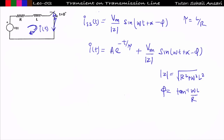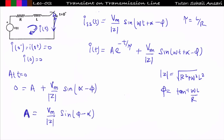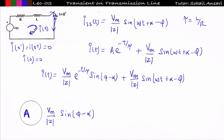In the transient response there is one constant A, which we find using the initial condition. At t = 0⁻ the current is zero, and since the inductor won't allow a sudden change in current, i(0⁻) = i(0⁺) = 0. So i(0) = 0. Substituting t = 0 into the complete response equation (e^0 = 1), we solve for A = −(V_m/|Z|)·sin(α − φ). This gives us the complete current equation combining transient and steady state.